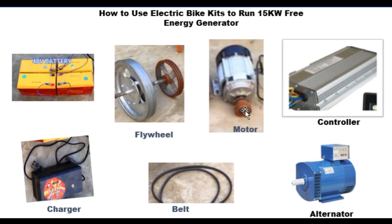Number three: you also have the flywheel. The flywheel is mostly used for kinetic purposes and is used to keep energy. When you want to keep your voltage constant, you must have a flywheel. Then there must be a belt — the belt helps to join the system together. When you want to join the motor to the flywheel and join one pulley to another pulley, you need a belt, so use the belt to join them.